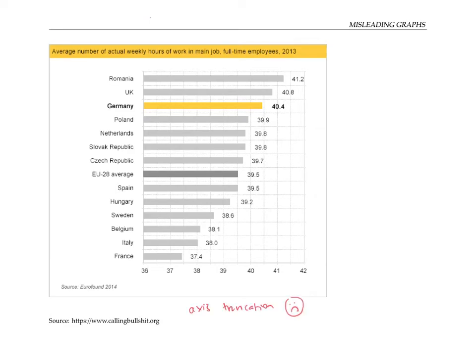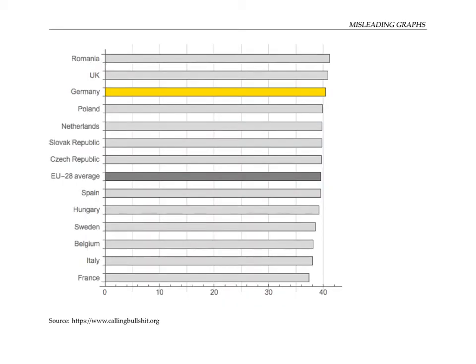We'd get a much better visual impression of the relative sizes of the work week in the countries if we redid this graph to start at zero. Here, the x-axis is starting at zero, so the length of the bar really is proportional to the number of hours worked each week. We can see that while it's still better to be a worker in France than in Romania, the difference is not quite so striking.